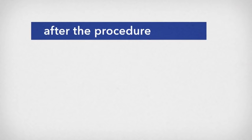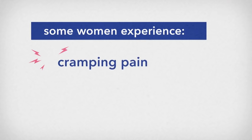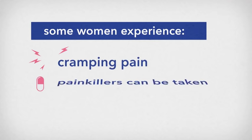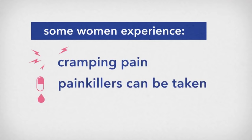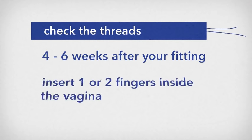After the procedure, some women have cramping period-like pain and you should take it easy for the rest of the day. Cramps usually settle after a few days and simple painkillers can be taken. You may also have some light bleeding from the procedure itself. We ask you to check that the threads of your IUD are still there four to six weeks after it has been fitted. You can do this by inserting one or two fingers inside the vagina.